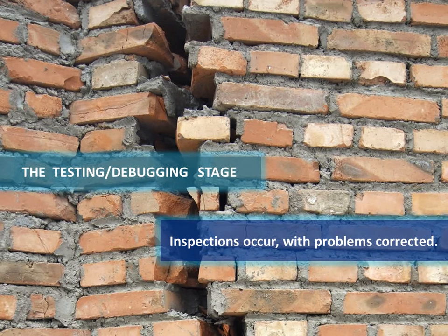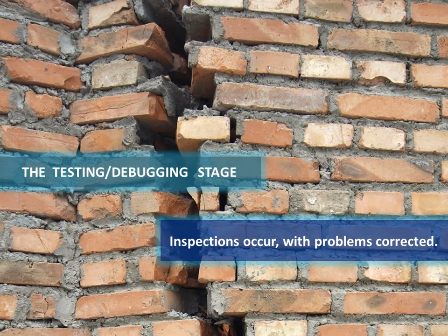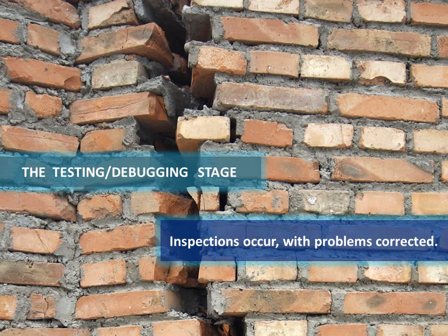Once that is coded and we have the interface developed, we then enter the testing and debugging stage. This is where we look for problems — we want to make sure our application works the way it should. In a home building situation, there's a walkthrough with the final owner. The homeowner comes through and looks for things that are not quite done correctly or that need to be fixed, such as some paint missing, paint drips, or maybe a light switch that doesn't work. Those things are noted on a punch sheet and the corrections are made — that's the testing and debugging stage in the programming environment.